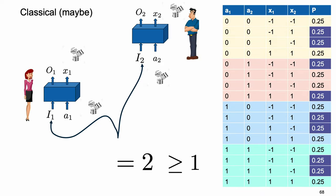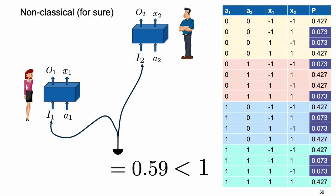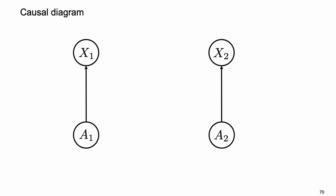With a classical setting the sum is greater than 1 — nothing remarkable. But if someone claims they ran an experiment with just coins and dice and gives me a table where the sum of the designated cells equals 0.59, I can say: there's no way that was done with coins and dice. That number being below 1 proves something non-classical is happening. Everything here is based purely on the statistical distribution of outputs.